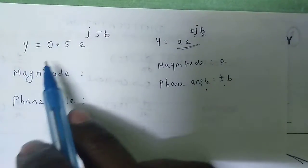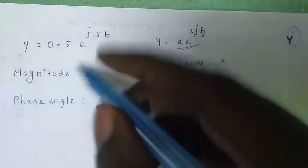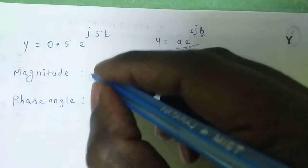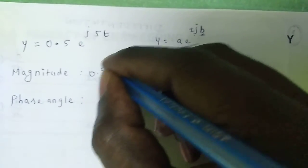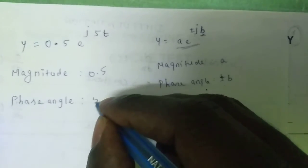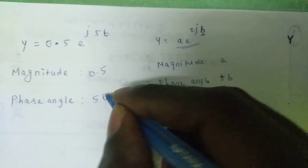Here we go. y is equal to 0.5. What is the magnitude? 0.5 is the magnitude and phase angle is 5t.